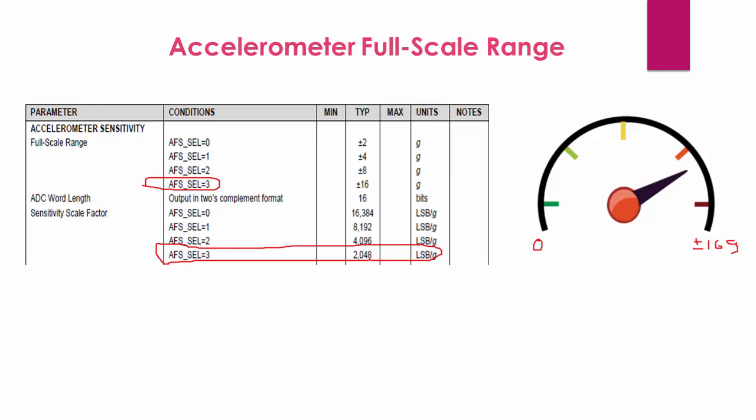This is the reading: 2048 is the reading for every g. So that makes sense. So if you take 2048 and if you multiply by 16 you get the bigger number, the higher bound value that is 32,768.